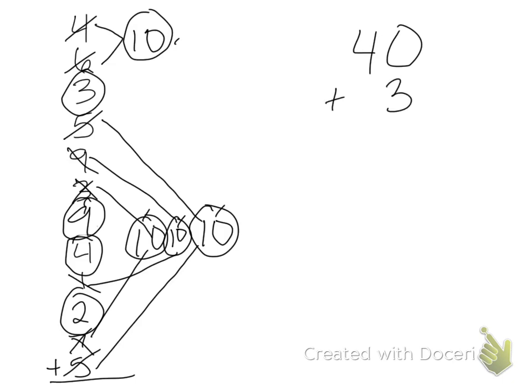So forty plus three is forty-three. Plus nine is fifty-two. Plus four is fifty-six. Plus two is fifty-eight.